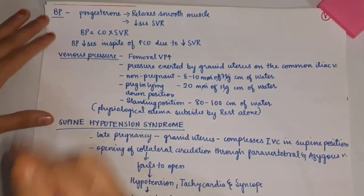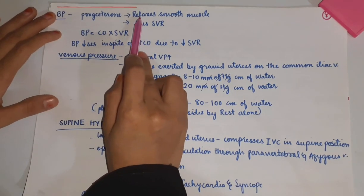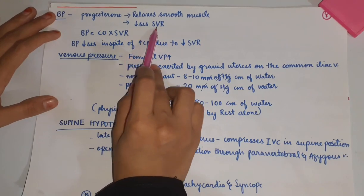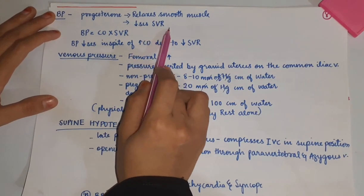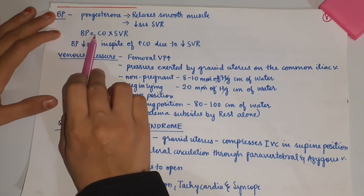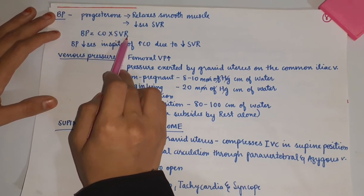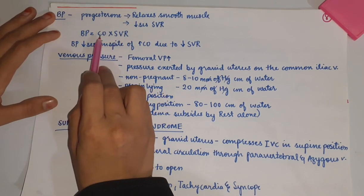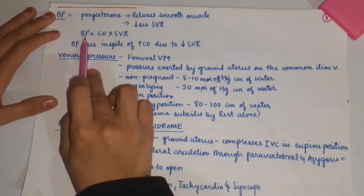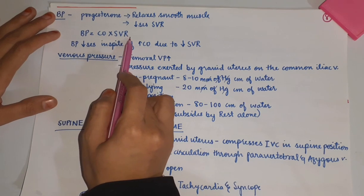Under the influence of progesterone, smooth muscles relax, leading to decreased systemic vascular resistance. The formula for BP is cardiac output multiplied by systemic vascular resistance. Even though cardiac output increases, there is a decrease in BP due to the decrease in systemic vascular resistance.